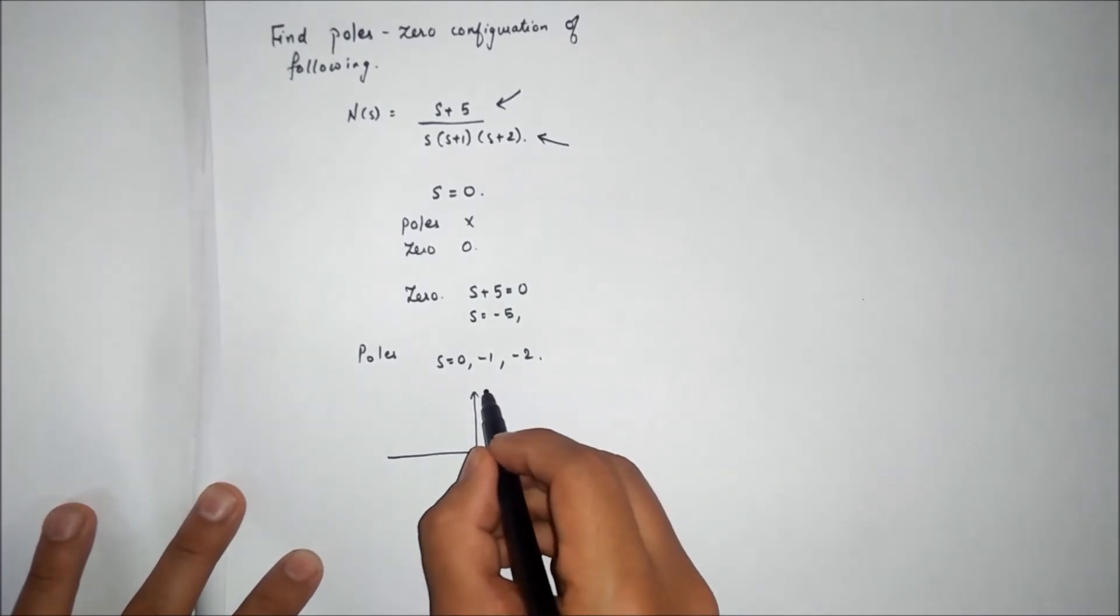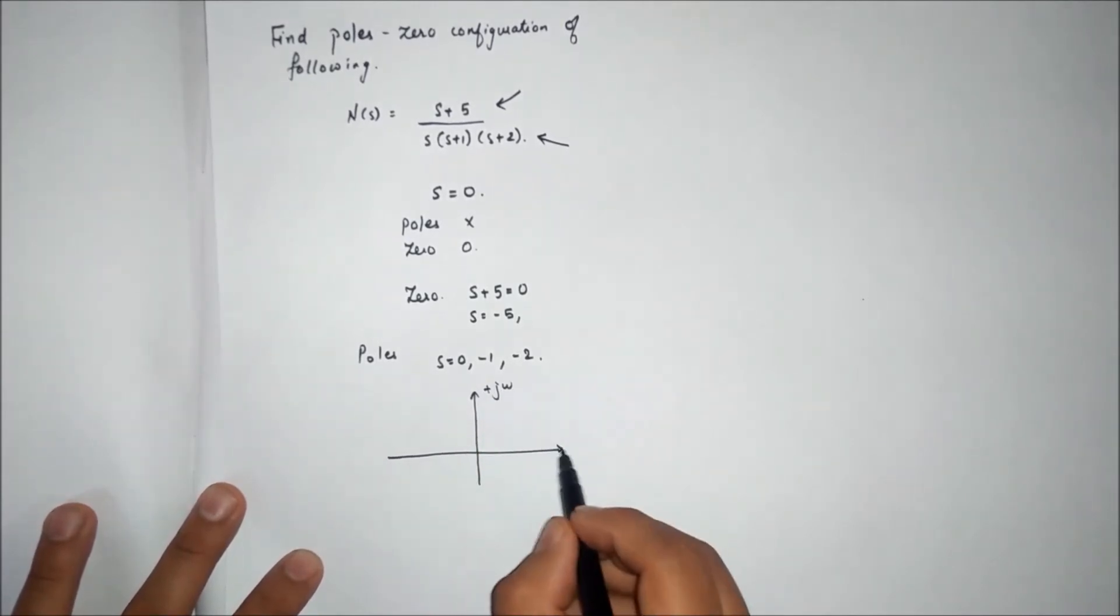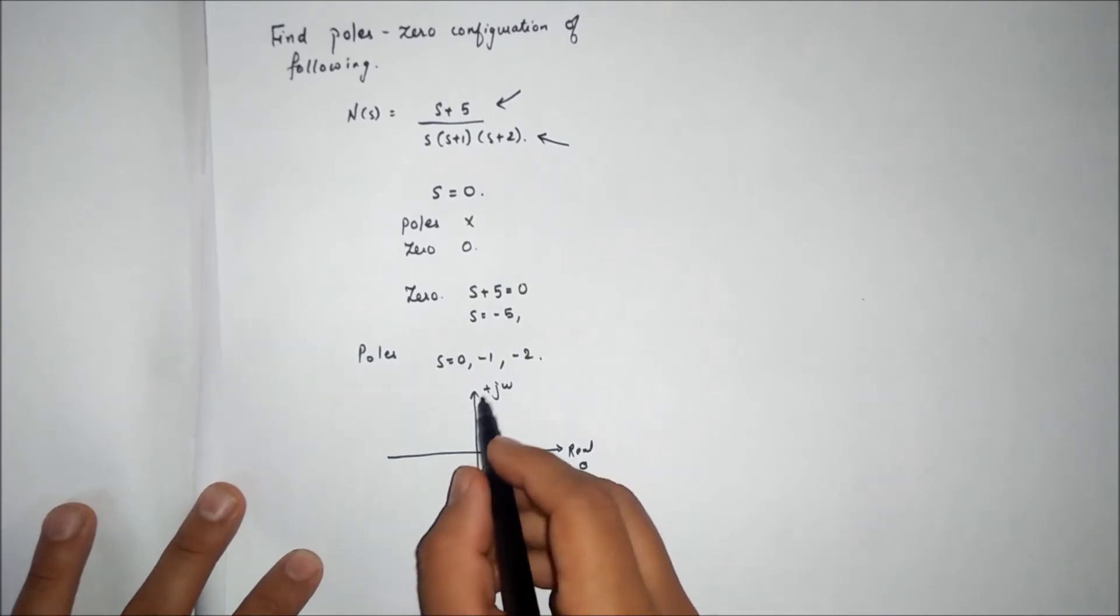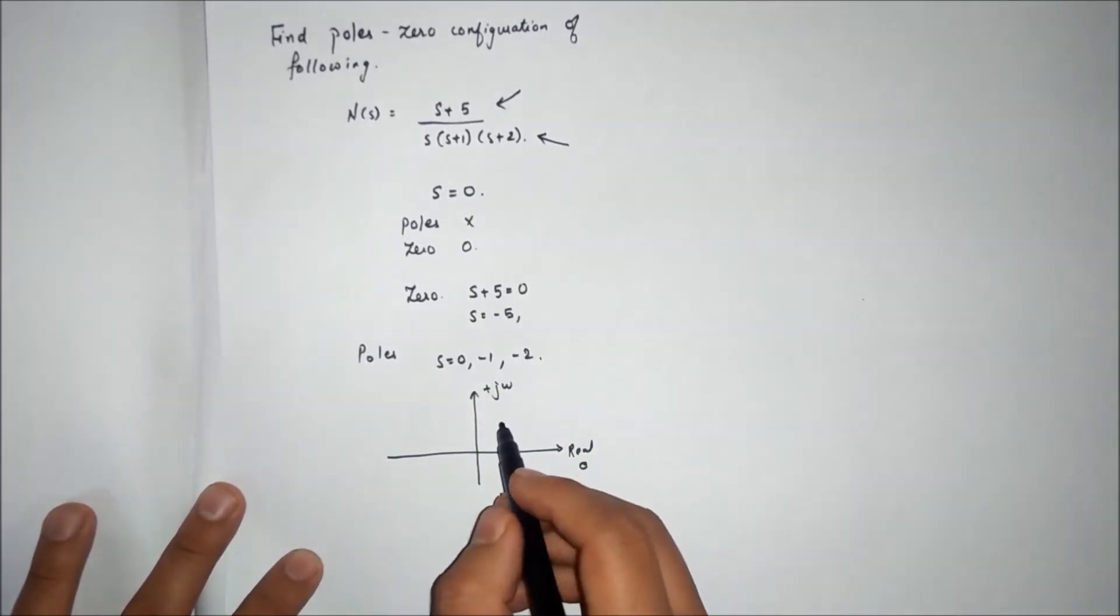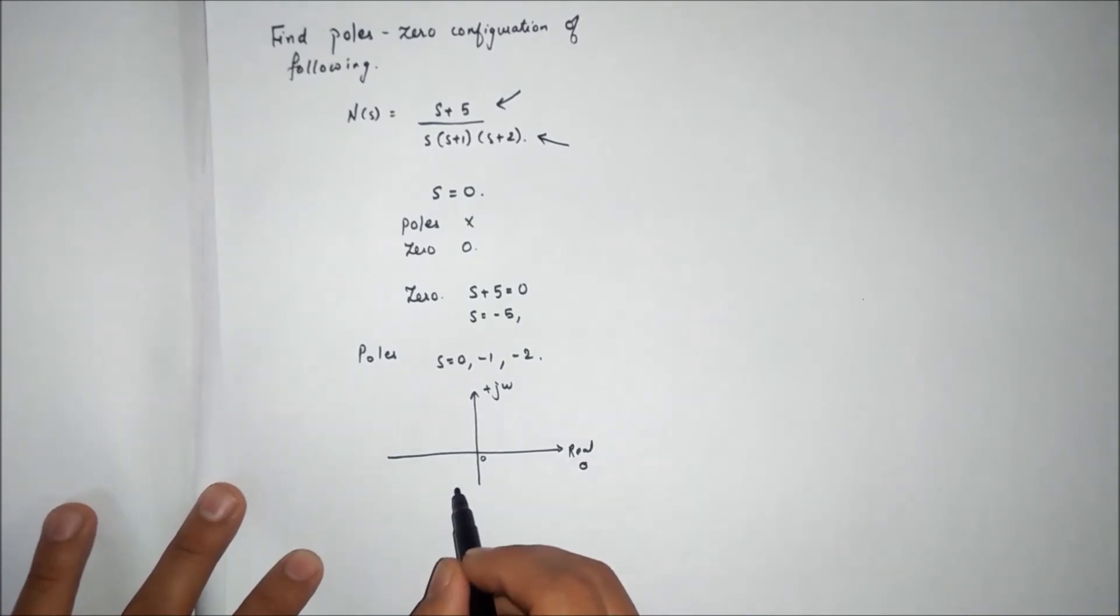This will be the imaginary part and this will be the real part. Here there are no imaginary parts; all are real parts. So for zero,